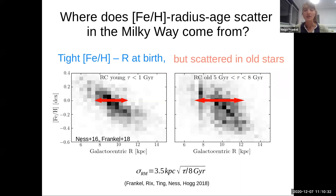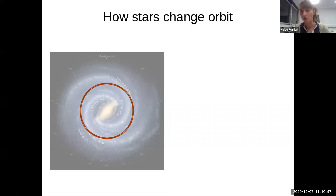If you do better modeling and really try to measure how much stars spread in radius, you would find that it's 3.5 kiloparsec after 8 gigayears — about the age of the galactic disk. So after a lifetime, stars have spread by 3.5 kiloparsec, which is really the scale length of the galactic disk. But only knowing that stars spread a lot in radius doesn't tell us how stars change orbits. There are many things that can cause stars to change orbits. So how really do stars change orbit?